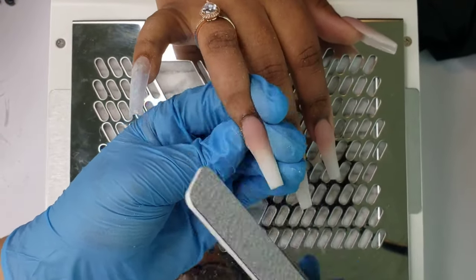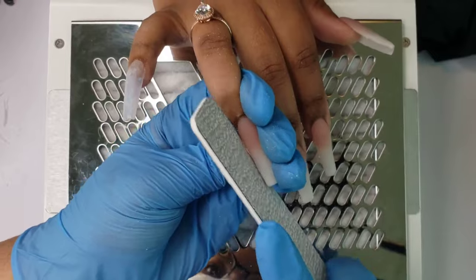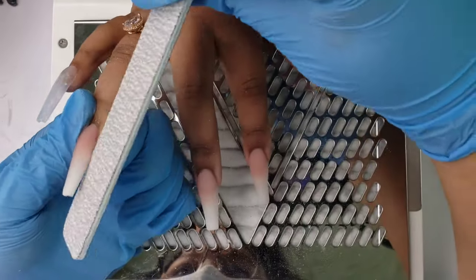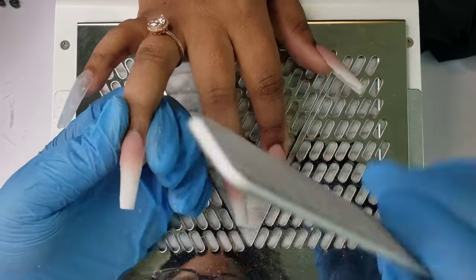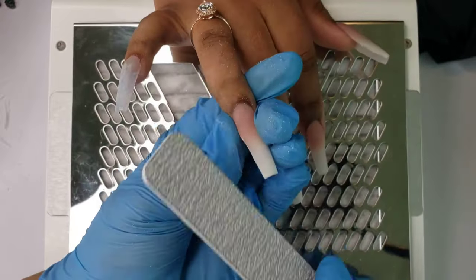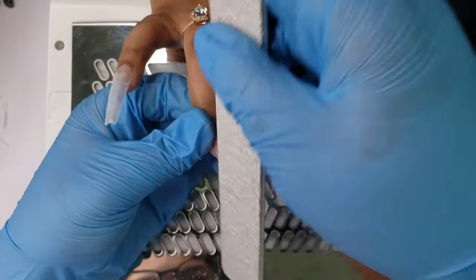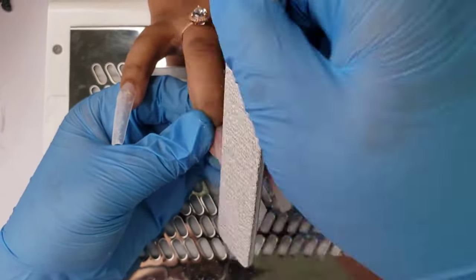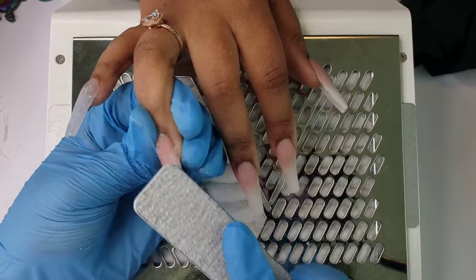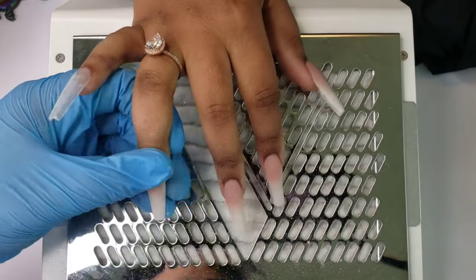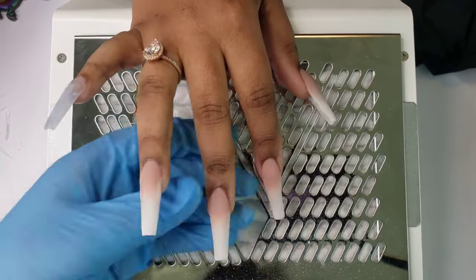Also be sure to file underneath the nail so that the underside is nice and straight and free of any curvatures or divots. During this step I'll also take the file and go along the sides of the nail to flatten it out by the base, back near where the cuticle is, because it's a lot easier to get that smooth with the hand file over the e-file.